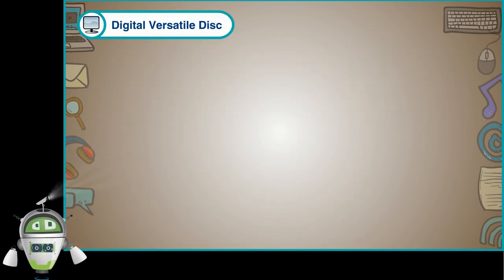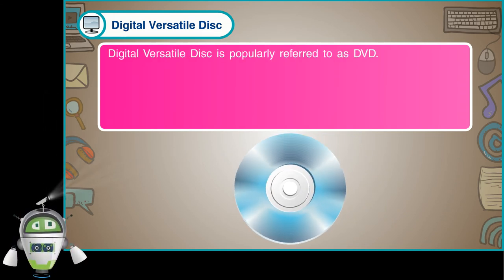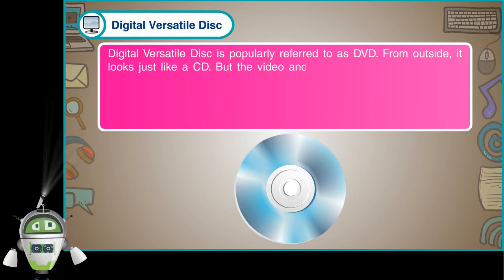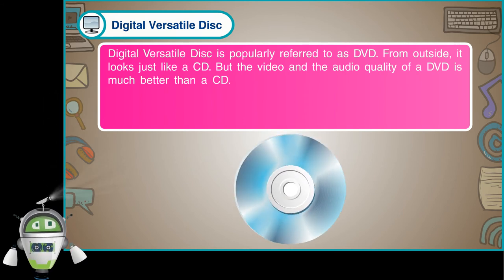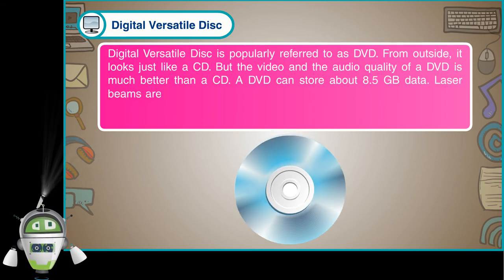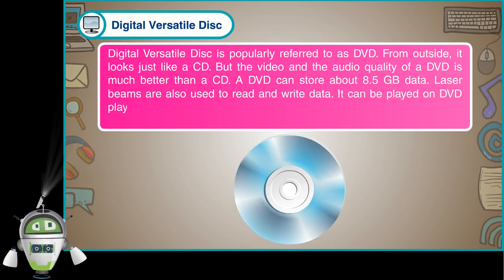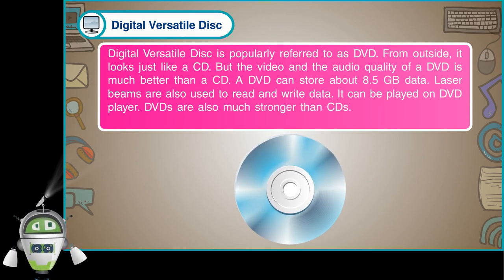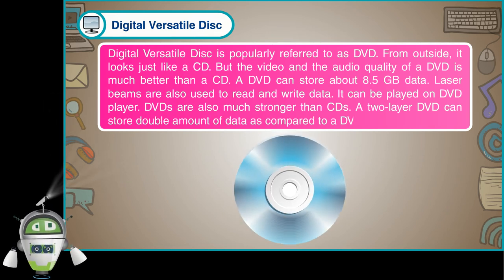Digital Versatile Disc is popularly referred to as DVD. From outside, it looks just like a CD, but the video and audio quality of a DVD is much better than a CD. A DVD can store about 8.5 GB of data. Laser beams are also used to read and write data on it. It can be played on a DVD player. DVDs are also much stronger than CDs. A two-layer DVD can store double the amount of data compared to a single-layer DVD.